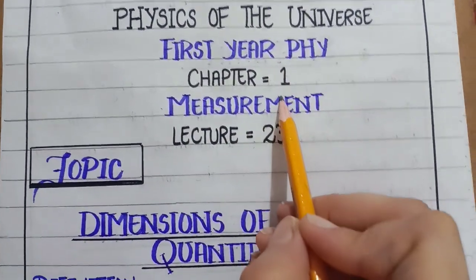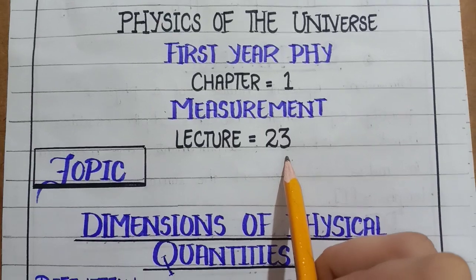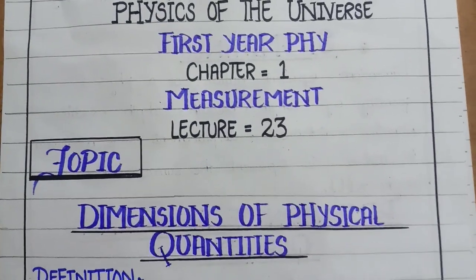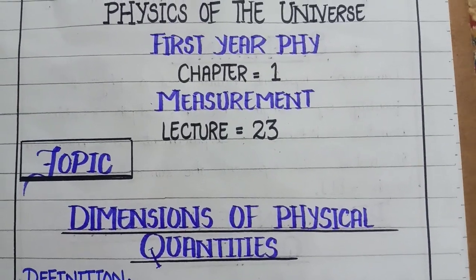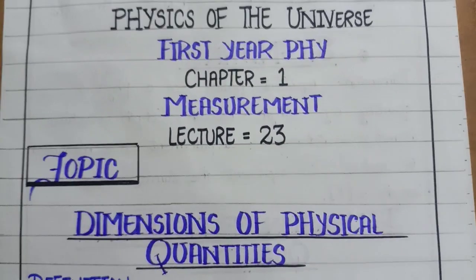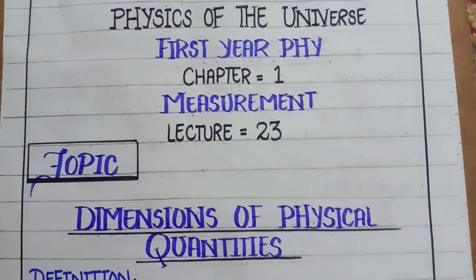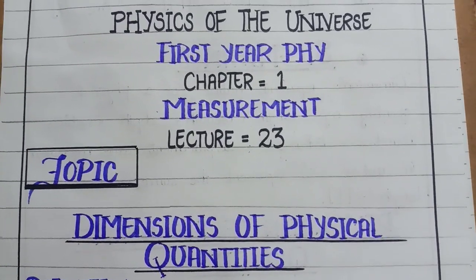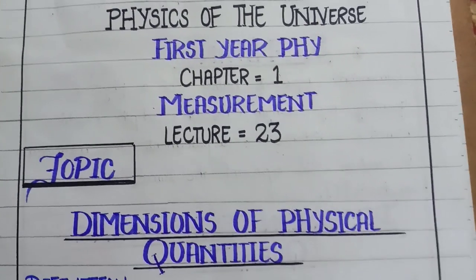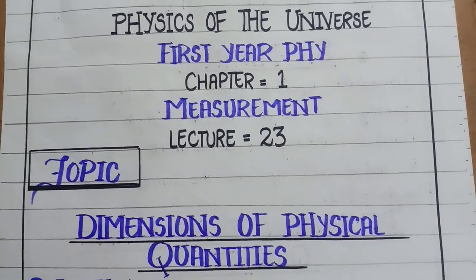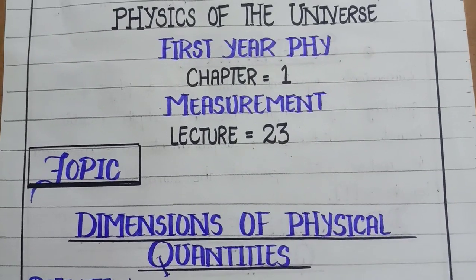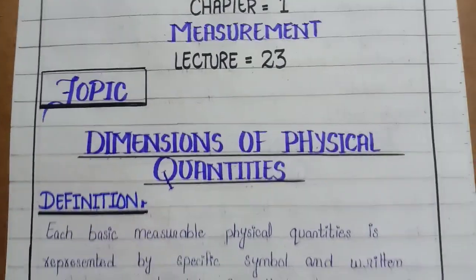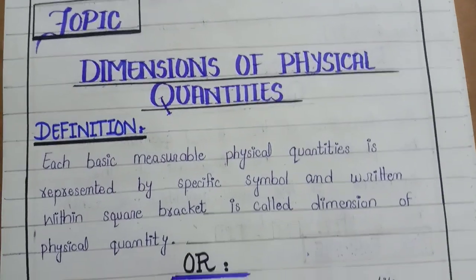Dear students, first year physics chapter number one, measurement, lecture 23 is our topic of discussion. We have dimensions of physical quantities. Before starting the topic, I want you to be clear about physics — it is a very interesting subject. Start learning physics by clearing the concept, and then you will feel that you love physics. So let's start the topic: dimensions of physical quantities.